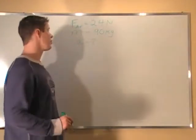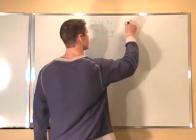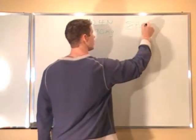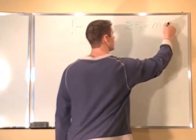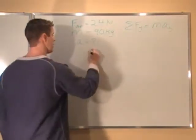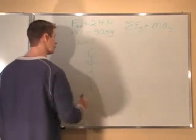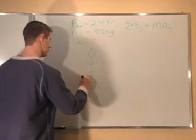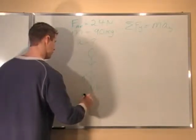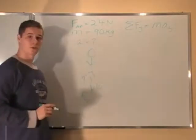All we have to do for this one is sum the forces. Sum of the forces in the y-direction equals mass times acceleration in the y-direction. If we look at the guy, he has the weight force acting down, and he has the air resistance force acting up.